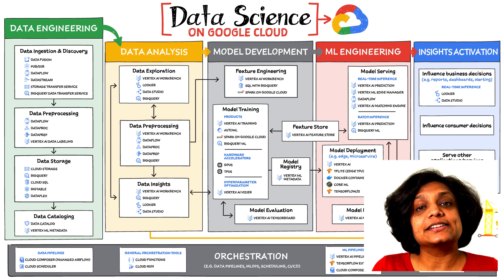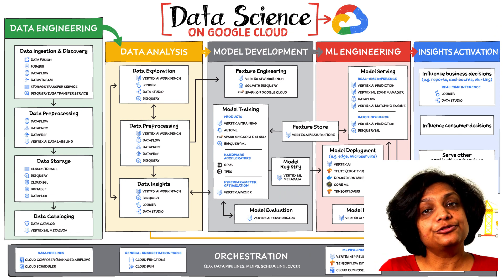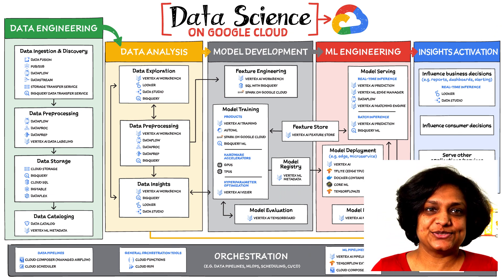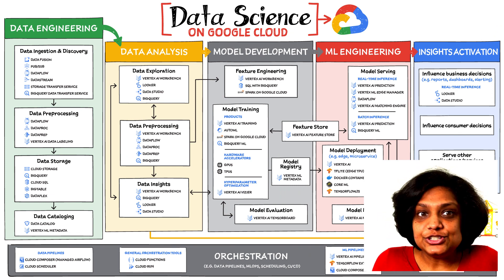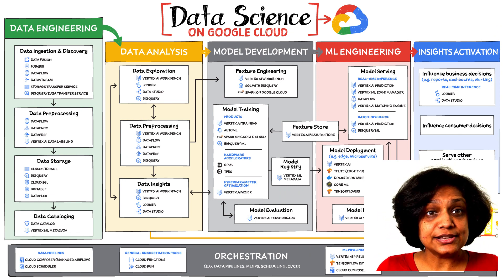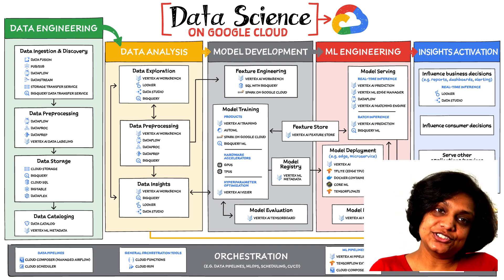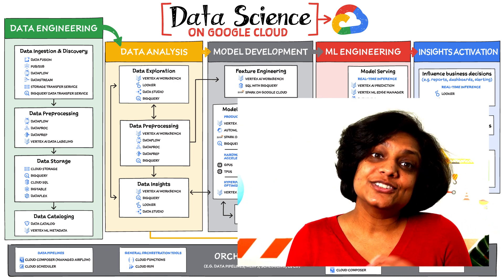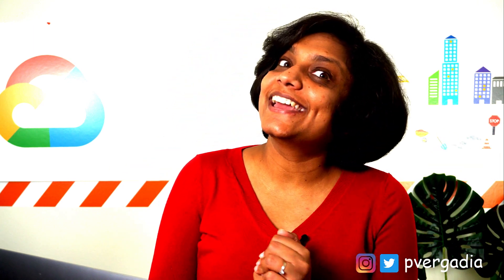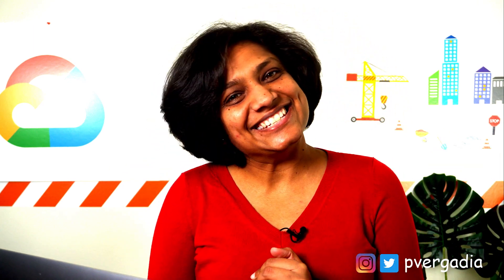Those were the six broad areas critical to a data science workflow and for making data useful. Which of these areas is of most interest to you? Share with me in the comments below. If you liked this video, don't forget to like and subscribe for more such content.